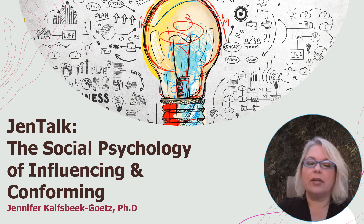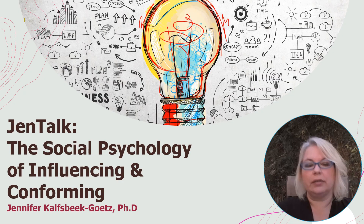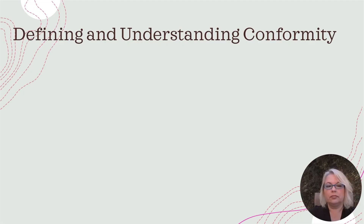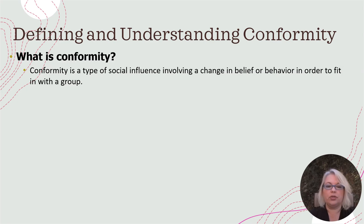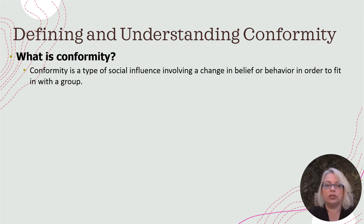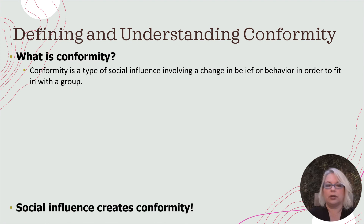Hi, class. It's time now to talk about the sociology of influencing and conforming. First of all, we need to define and understand what conformity is. It really refers to a type of social influence involving change in belief or behavior in order to fit in with a group. If you're living in isolation, there's nothing to conform to, so that social influence element is critical.